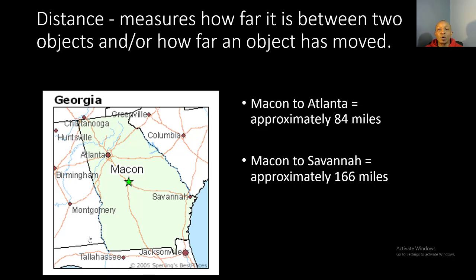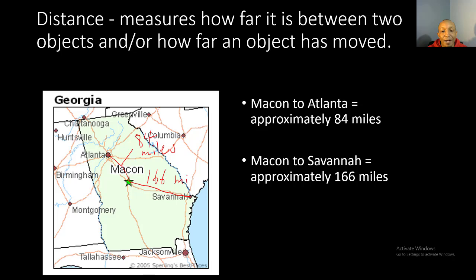Next we take a look at distance. Distance measures how far it is between two objects and/or how far an object has moved. For example, from Macon to Atlanta is approximately 84 miles, and from Macon to Savannah would be approximately 166 miles. That's the total distance traveled from one place to another.